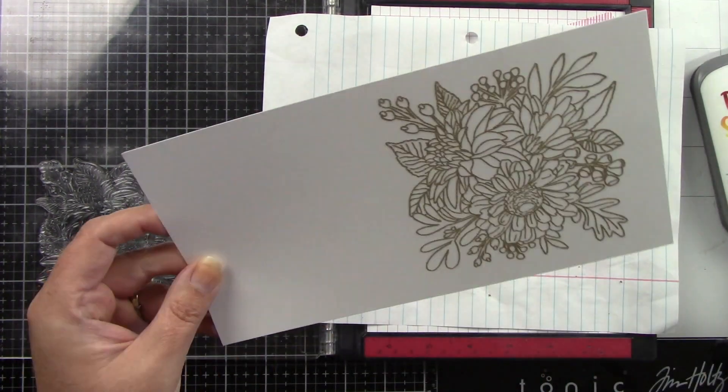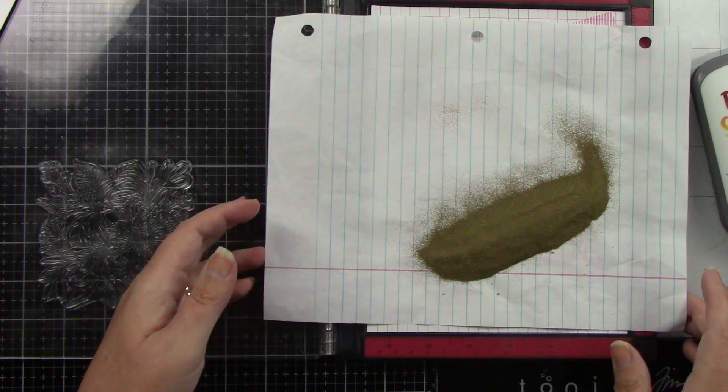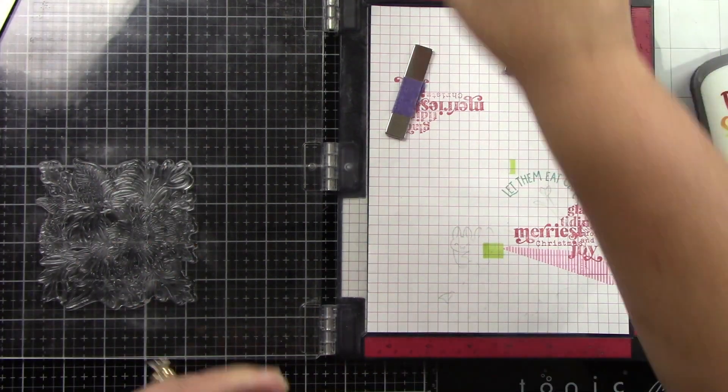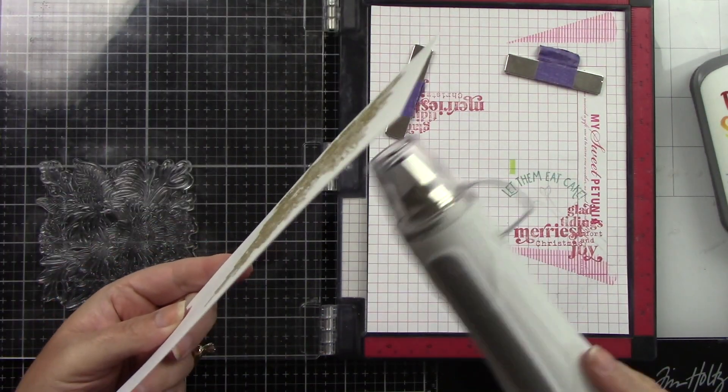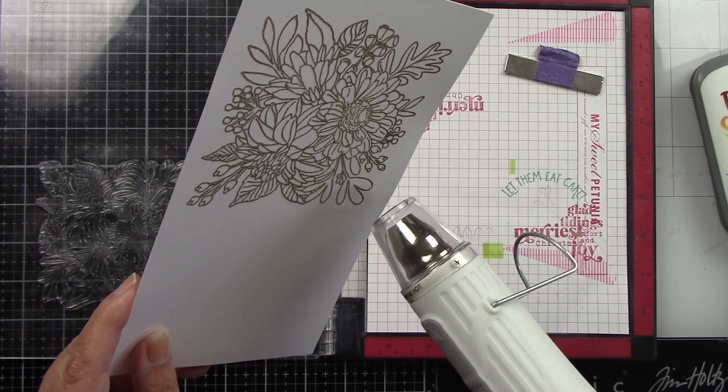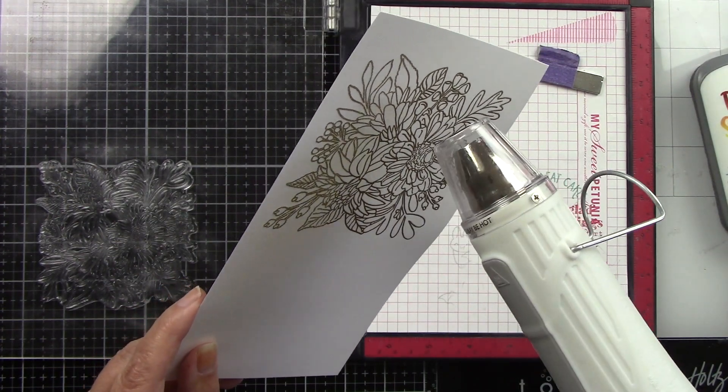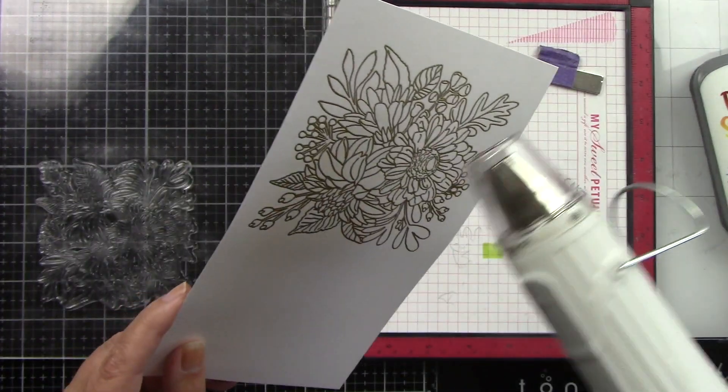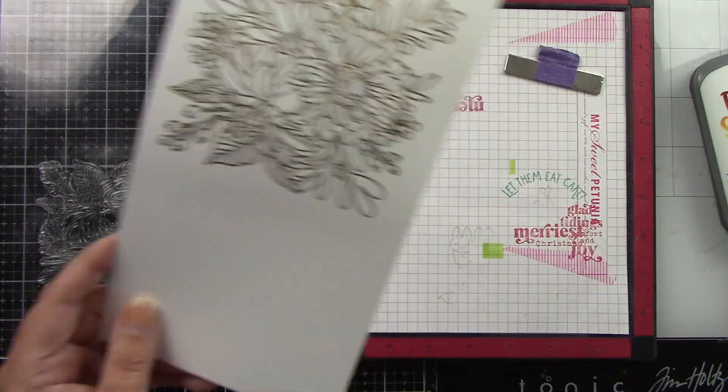My heat gun is on, getting nice and hot. I like to turn it on as soon as I'm starting to stamp something I'm going to be embossing. I can just take my heat tool to the paper. I love watching embossing powder melt and you know it's done when it is nice and shiny. I'm going to melt that and then we're going to start using the layering stencils.